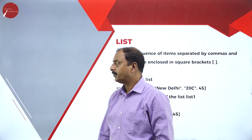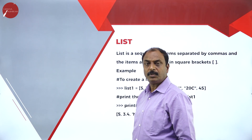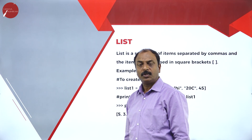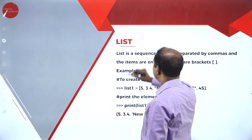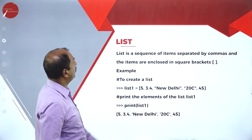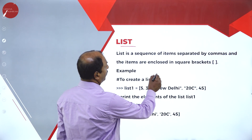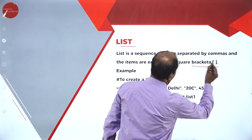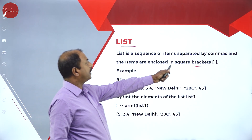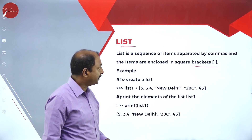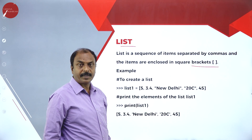Let us continue our discussion with the data type. In our previous session, we discussed about data types and different types of data types. Now we continue with list. What is a list? List is a data type — it is a sequence of items separated by commas, and items are enclosed in square brackets. We store values inside square brackets and each item is separated by a comma.